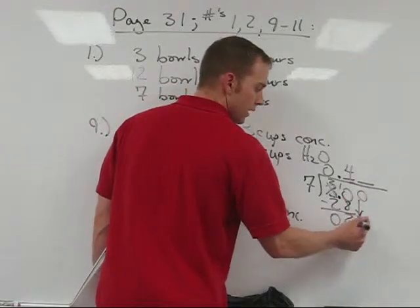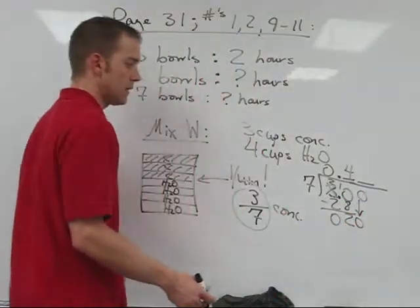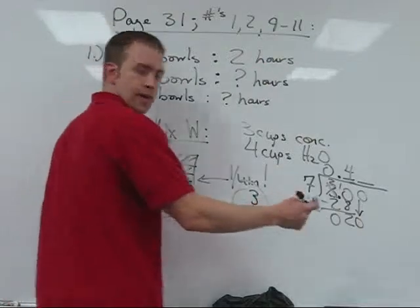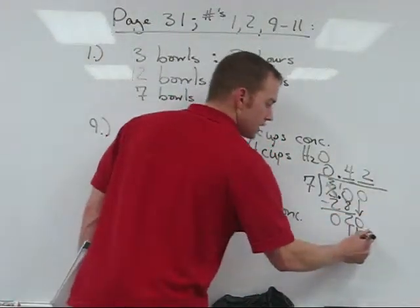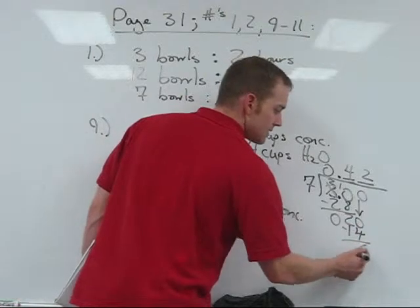And at this point, since I have a remainder, I would have to continue dividing now. I know that this becomes 20 now. I say seven goes into 20 twice. Now, that's 14 leaving behind six.